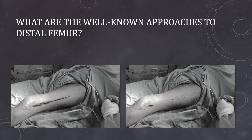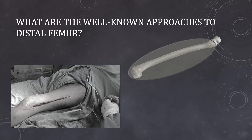If we want to reduce the fracture under direct vision — that means open reduction — then we can use a longitudinal incision to expose the fracture. But if we want to reduce the fracture indirectly, we can use the MIPO technique, in which only some parts of the incision are used for passage of the lateral plate. So the whole lateral surface including the distal part can be exposed with the lateral approach.